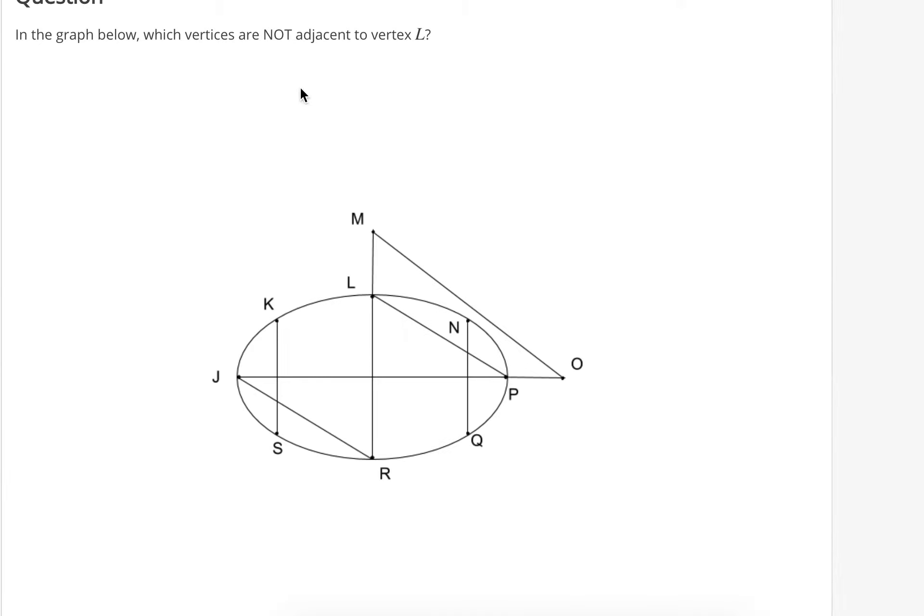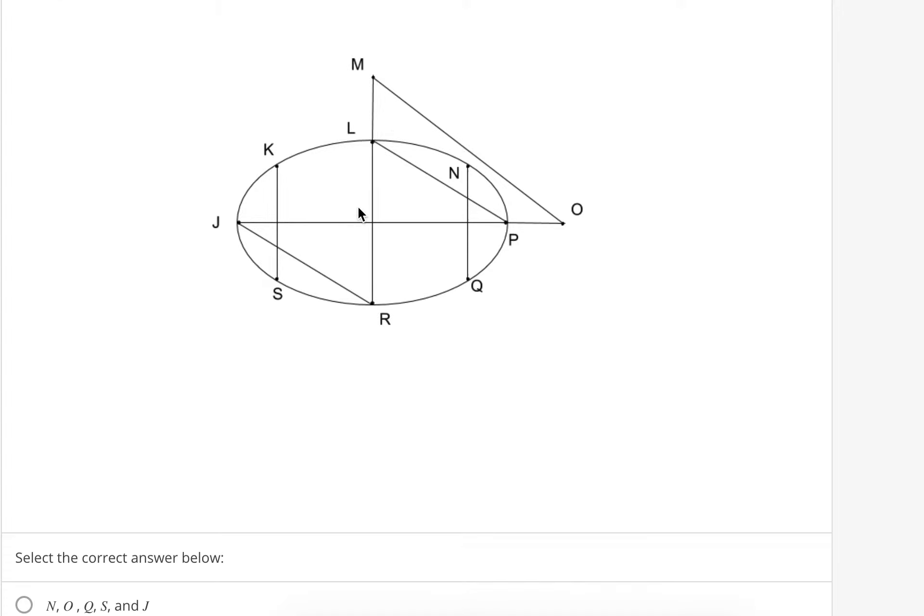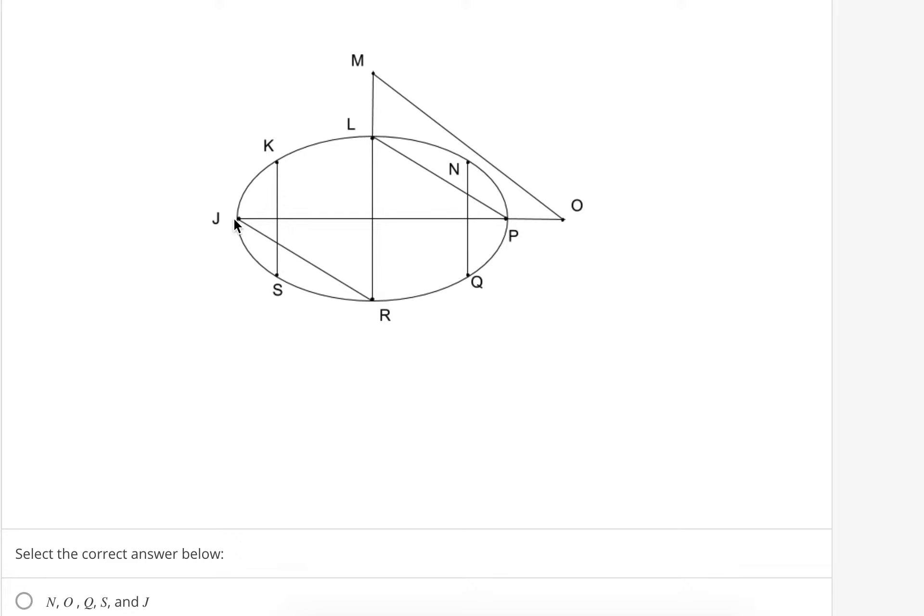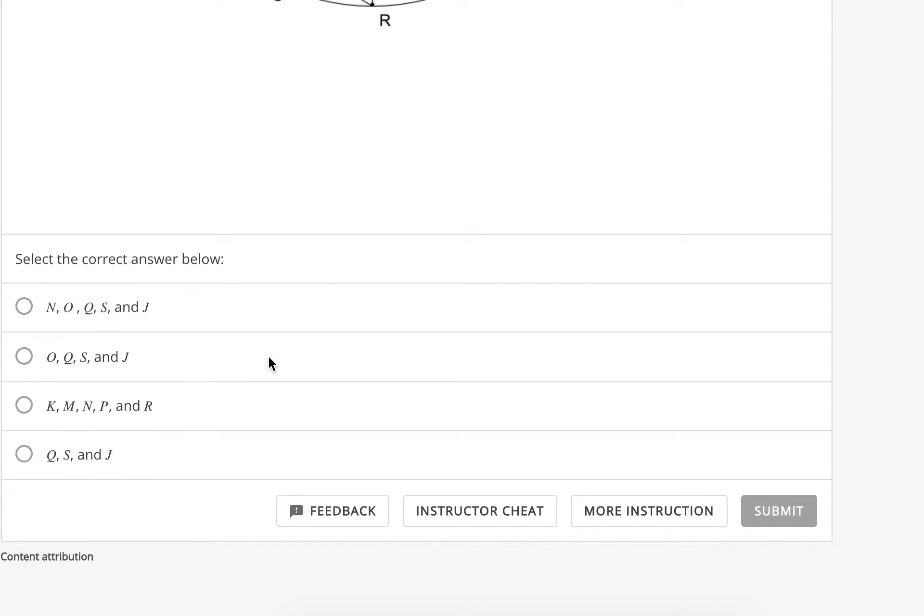Let's see what we got, which are not adjacent. Oh, so we're going to have to know for sure. I know J is not adjacent because we have to go from L to K and then from K to J. So you'd have to use two edges to get from L to J. So J is not adjacent.